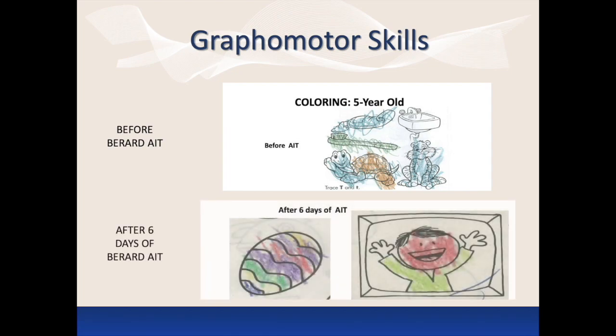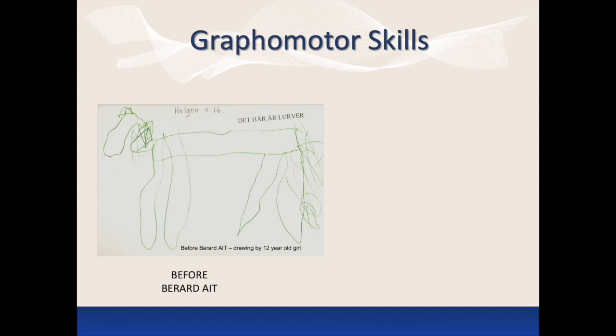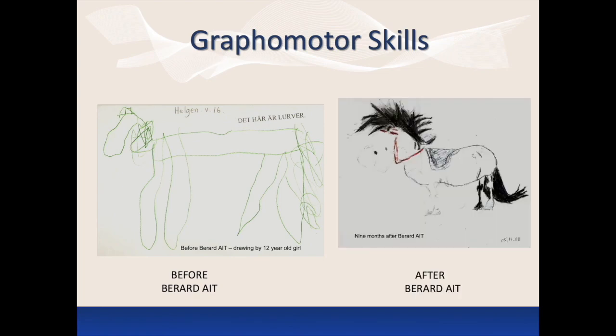After six days of Berard AIT, the child used much more control and selected colors appropriately. A 12-year-old girl loved to draw horses. This is an example of her drawing before she participated in Berard AIT. Nine months after completing Berard AIT, she was able to draw a much more detailed and complete picture, including the saddle and bridle on the horse.